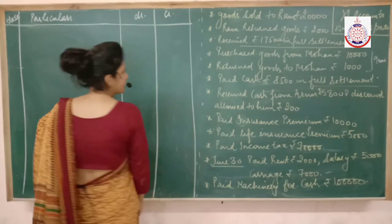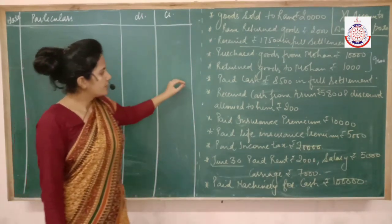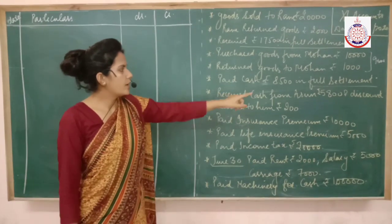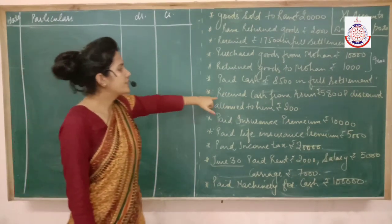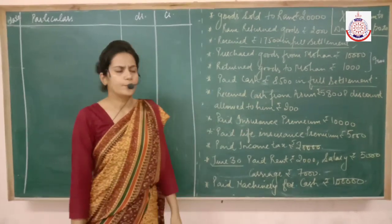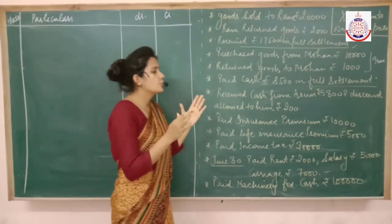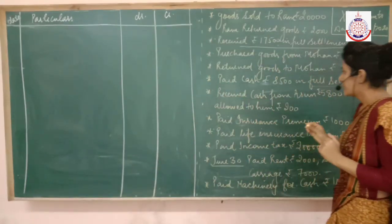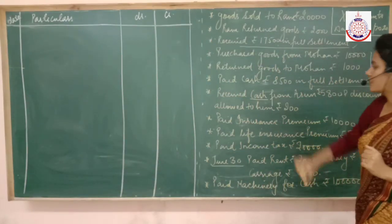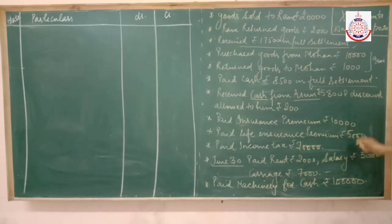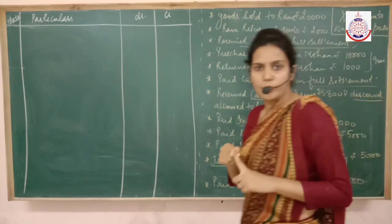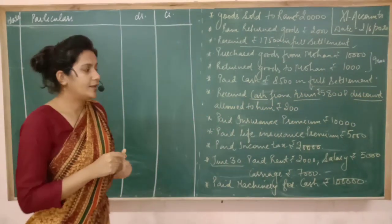Moving to the next topic: received cash from Arun 5800 and discount allowed to him 200. We have received cash of 5800 and allowed a discount. First, understand how many accounts are involved. We have received cash from Arun, so the cash account is involved, Arun's account is involved, and since we are giving a discount, discount allowed is also involved. So three accounts are involved at a time: cash, Arun, and discount.